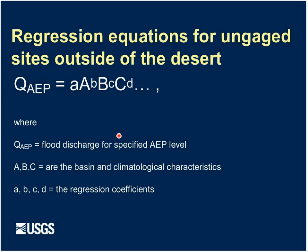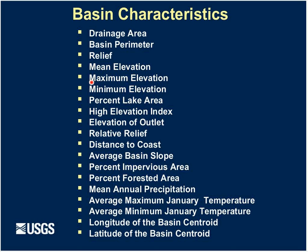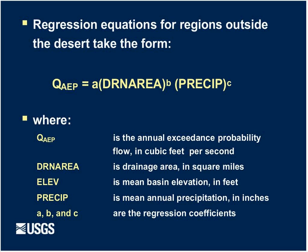For the regional regression equations, we develop equations to predict the 100-year or 1% annual exceedance probability flood based on explanatory variables — basin characteristics such as drainage area and mean annual precipitation. The form is a coefficient times drainage area to the power B, with corresponding coefficients. In this study, we looked at 19 basin characteristics. For all regions except the Lahontan and desert, the equations use drainage area and precipitation as explanatory variables. These are not yet finalized, so coefficients are not shown, but the approach requires determining drainage area and precipitation in the region to estimate flood quantiles.